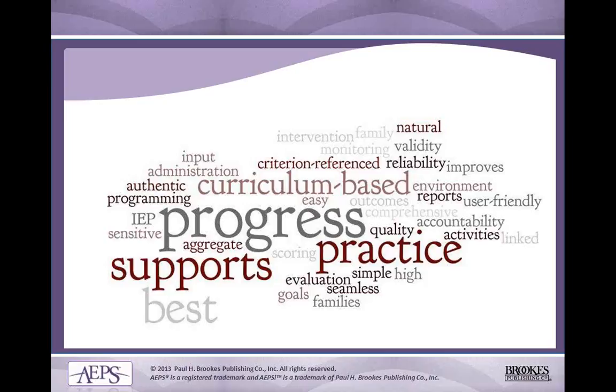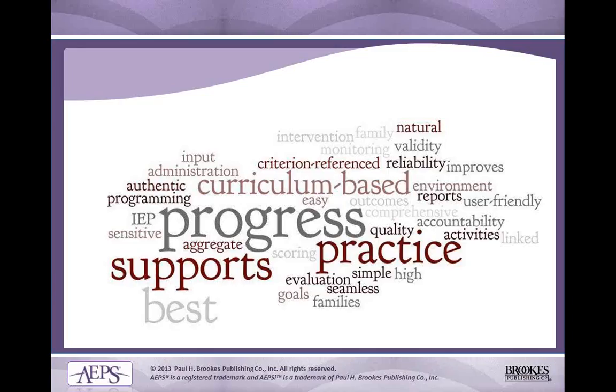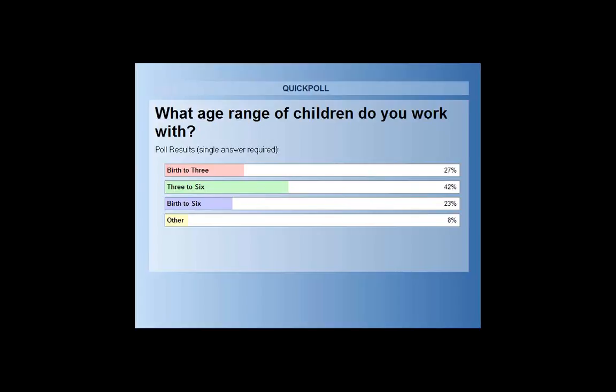One more question before we get started: what age range of children do you work with? Do you work with birth to three kiddos, three to five or three to six kiddos, or a mixed number? It looks like a small majority of the people work with three to six-year-olds. We have 27% work with birth to three, 42% work with three to six, 23% do birth to six — the whole range — and then we have 8% other.